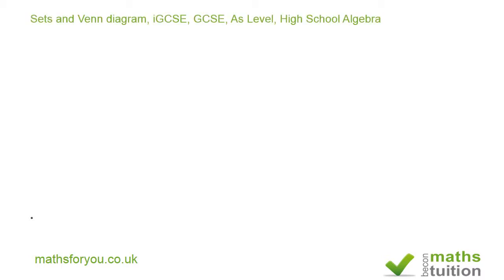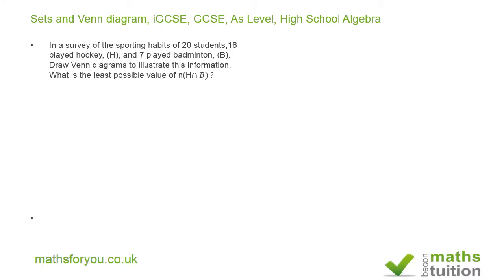Welcome to this exercise on sets and Venn diagrams — an IGCSE past exam question for AS level and high school algebra. In a survey of the sporting habits of 20 students, 16 played hockey (H) and 7 played badminton. The question asks: draw Venn diagrams to illustrate this information, and what is the least possible value of the number of students who played both hockey and badminton?